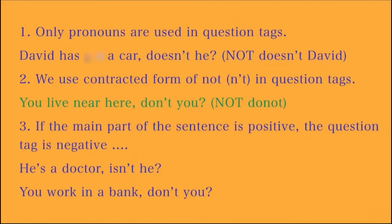In a question tag, only pronouns are used — we don't use the noun. For example, 'David has got a car' — we use 'doesn't he,' not 'doesn't David.' Similarly, we use the contracted form of 'not': we use an apostrophe, not the full word. For example, 'You live near here, don't you?' — not 'do not you.'